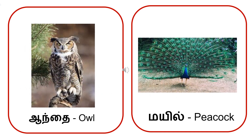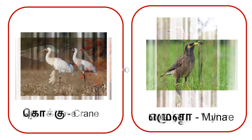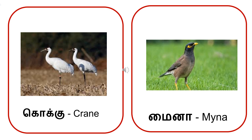A-i-ni-thay. Andhey. Andhey is owl. Ma-i-il. Maiil is peacock. Pura. Pura is dove. Paruindu is vulture. Koku is crane.